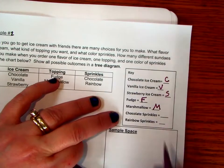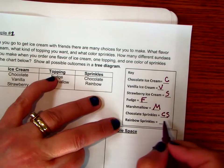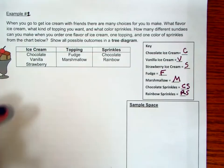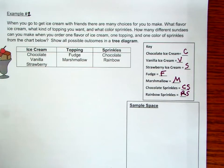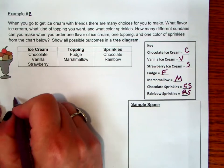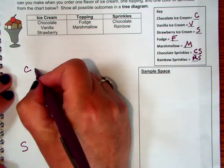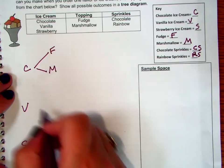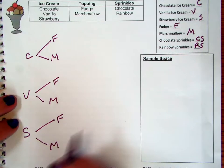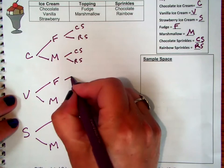So we're going to an ice cream shop, and we have a number of different decisions. In this particular ice cream shop, you don't have a whole lot of options. You have three options for ice cream: chocolate, vanilla, and strawberry. And then you can have two toppings — those are the only options — so either fudge or marshmallow. And you can have two types of sprinkles: either chocolate or rainbow. We're going to show this in a tree diagram. Sometimes you might want to make a key rather than writing the whole thing out. So I'll call chocolate ice cream C, vanilla ice cream V, strawberry ice cream S; fudge F, marshmallow M; chocolate sprinkles CS, and rainbow sprinkles RS.